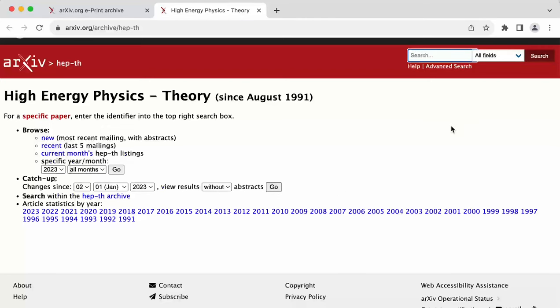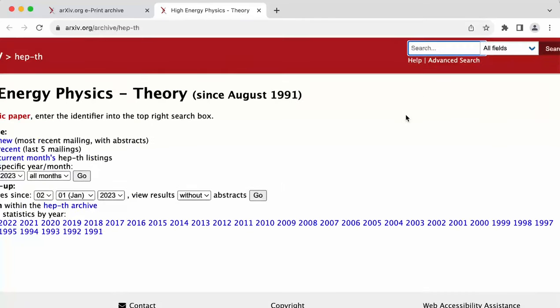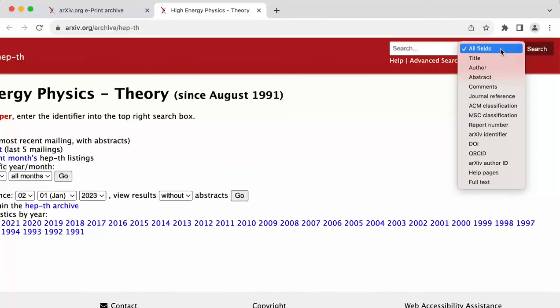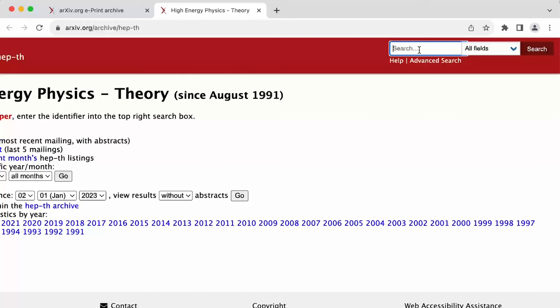Of course, if you know what you're looking for, you can directly go to the search box over here and type in whatever you want to search for. So, for instance, let's say you want to search for loop quantum gravity.